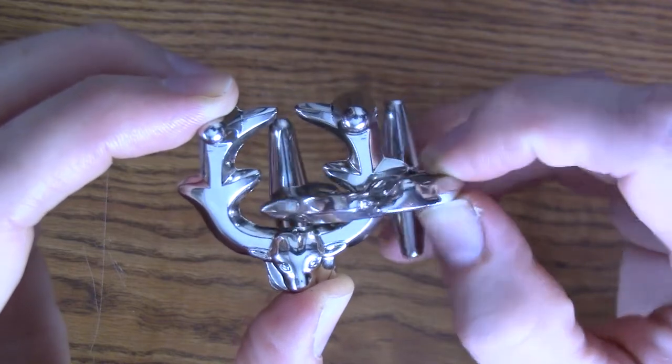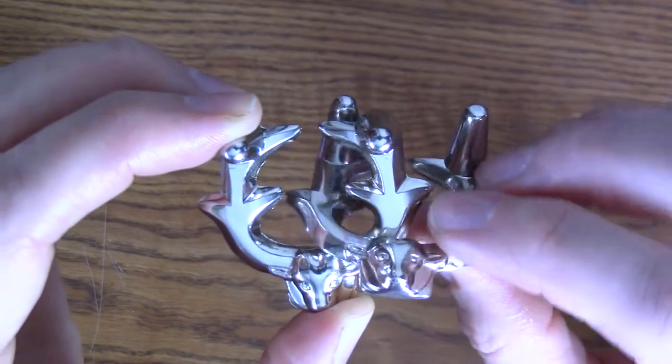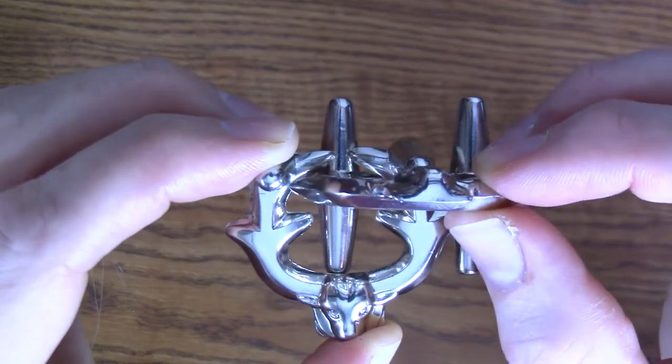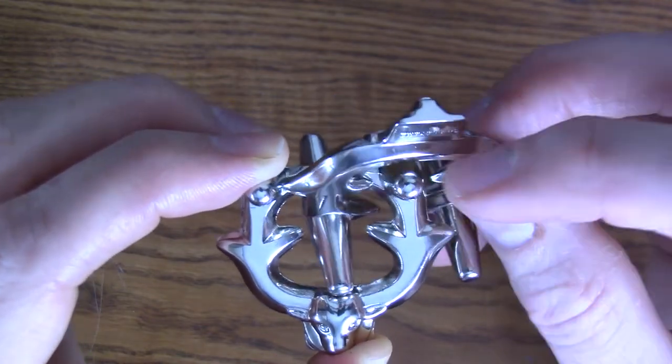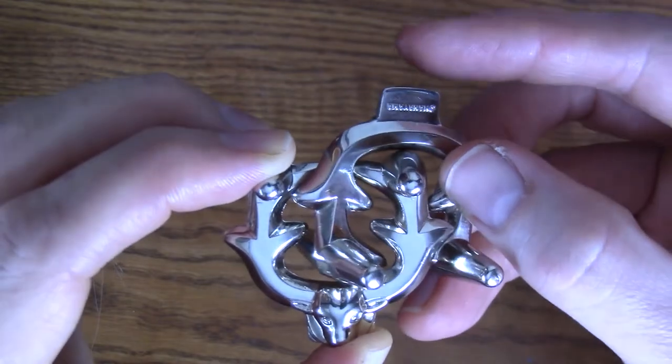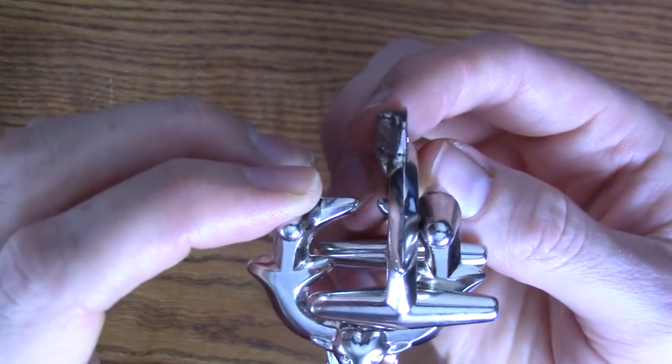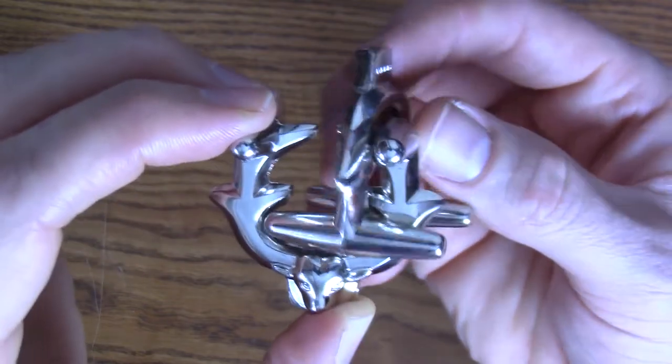I take my Hanayama piece and I move kind of the face of the elk straight towards me like this. Now I'm going to twist it over top of this antler piece. And then I turn it sideways in that way. See how that kind of fit through?